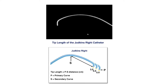For the right coronary artery, we have the Jutkins right, which also has a primary curve and a secondary curve. The difference is that the secondary curve is very shallow for the right coronary artery. It is also sized by the distance between the primary and secondary curve, but almost always we use a Jutkins right 4.